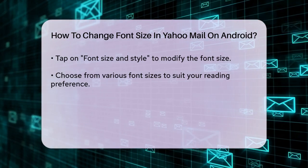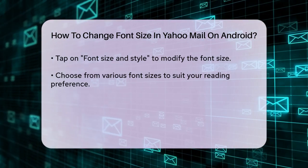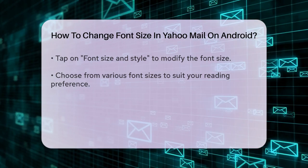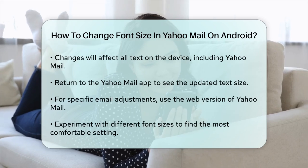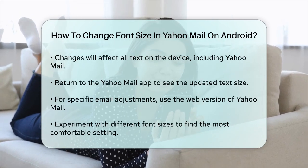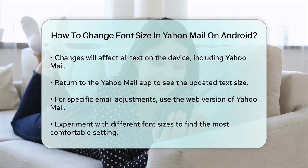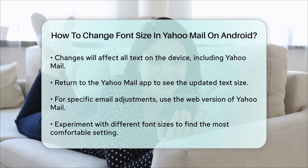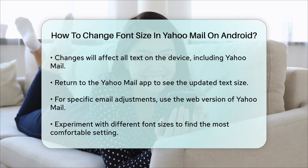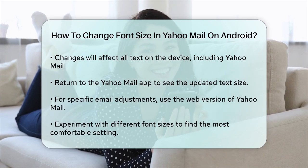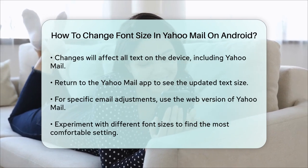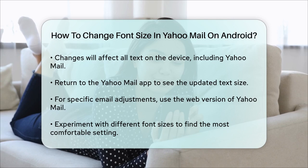If you want to make specific adjustments to the emails you send, such as changing the font style or size for individual messages, you can do this through the web version of Yahoo Mail. However, for the app itself, the device settings are the way to go. By following these steps, you can make your Yahoo Mail experience much more comfortable and readable on your Android device.